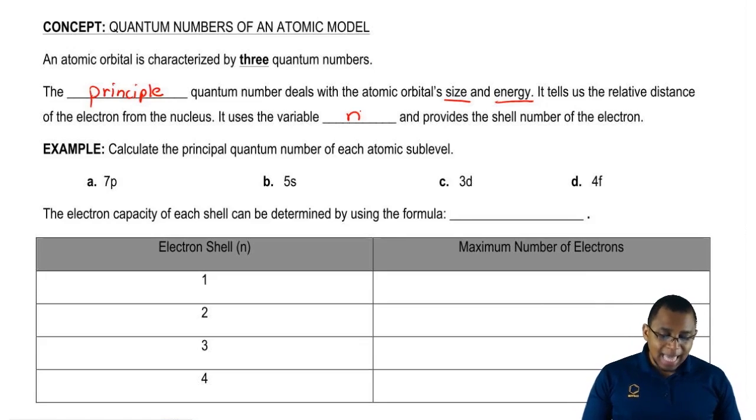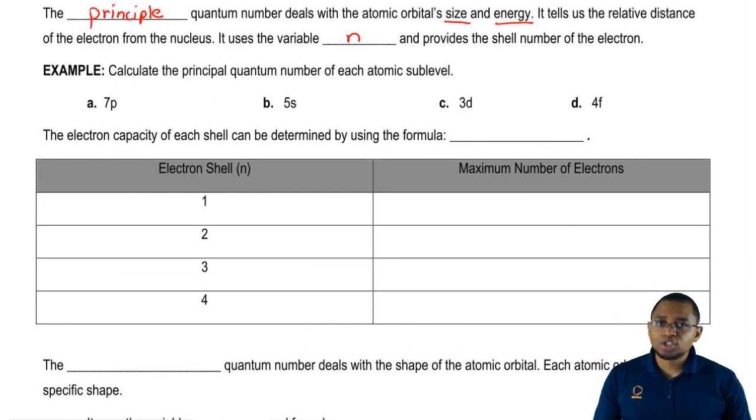For the first example, it says calculate the principal quantum number of each atomic sublevel. It sounds complicated, but it's really easy. We're going to say that the principal quantum number is just based on the number that goes in front of the sublevel letter.